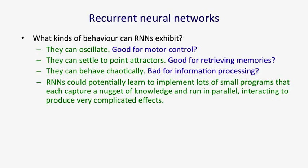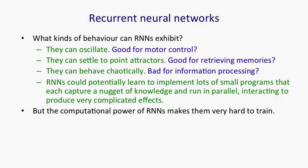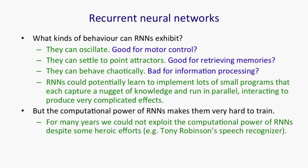One nice thing about RNNs, which a long time ago I thought was going to make them very powerful, is that an RNN could learn to implement lots of little programs using different subsets of its hidden state, and each of these little programs could capture a nugget of knowledge, with all of these things running in parallel and interacting with each other in complicated ways. Unfortunately, the computational power of recurrent neural networks makes them very hard to train. For many years, we couldn't exploit the computational power of recurrent neural networks. There were some heroic efforts — for example, Tony Robinson managed to make quite a good speech recognizer using recurrent nets. He had to do a lot of work implementing them on a parallel computer built out of transputers, and it was only recently that people managed to produce recurrent neural networks that outperformed Tony Robinson's ones.